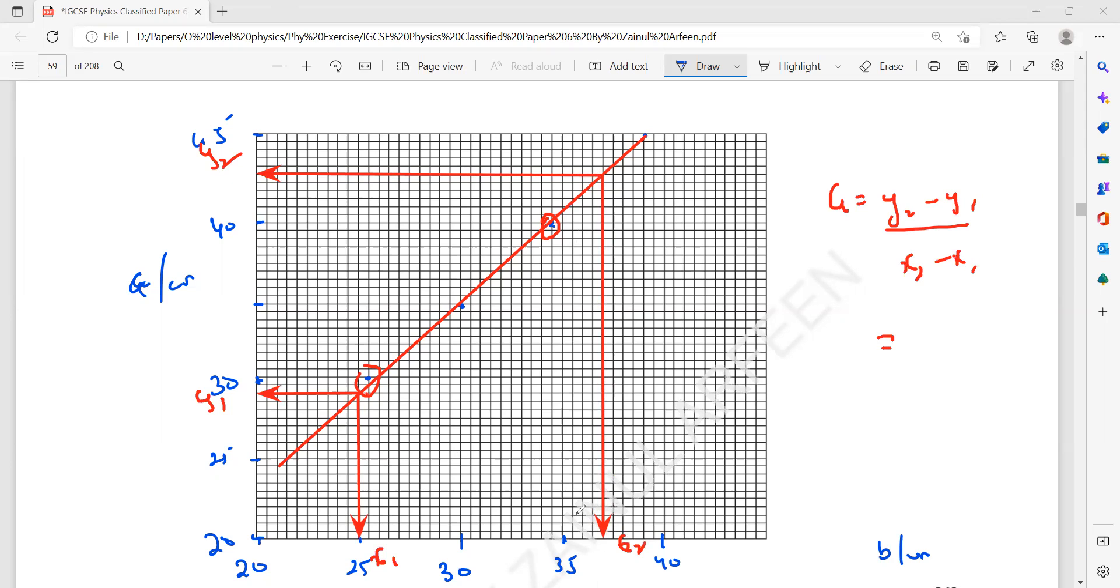So what is y2 here? This is 40, 41, 42, 43. So that is 43 minus y1, which is 29 divided by x2, which is 35, 36, 37 minus x1 is 25. So 43 minus 29, that is 14 divided by 12. That's equal to 1.16. So the gradient equals 1.16.